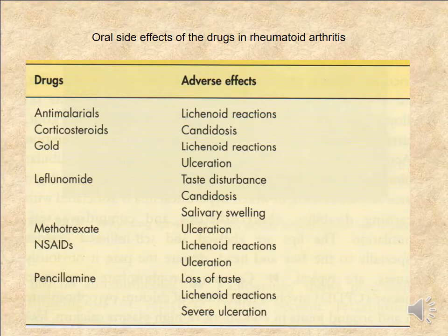The oral side effects of drugs taken for treatment of rheumatoid arthritis include: antimalarial drugs — oral erosions in the oral cavity; corticosteroids — candidiasis and other infections; gold compounds — lichenoid reactions and ulceration; leflunomide — taste disturbance and candidiasis and gingival swelling; methotrexate — ulceration; non-steroidal anti-inflammatory drugs — ulceration; and penicillamine — loss of taste, dysgeusia, and severe oral ulceration.